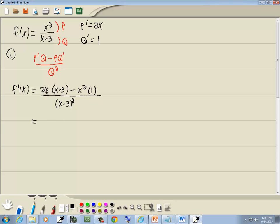I could factor out an x because they both have it in common. This is so easy, though, that I'm just going to go ahead and get rid of parentheses, combine and get like terms. 2x times x is 2x squared. 2x times negative 3 is negative 6x, minus x squared times 1 is just x squared, over x minus 3 squared. 2x squared minus x squared is x squared, minus 6x, over x minus 3 squared.